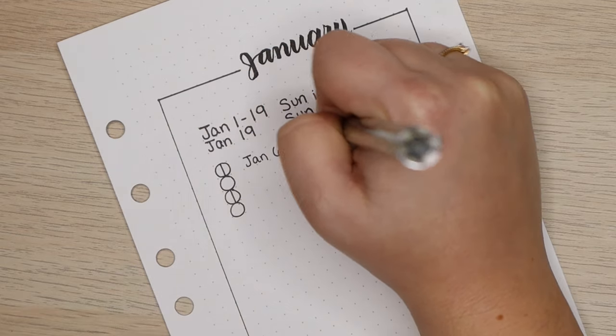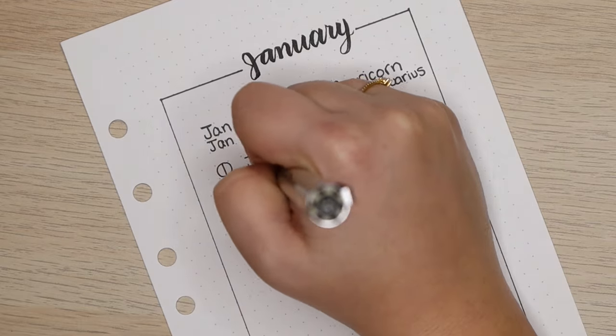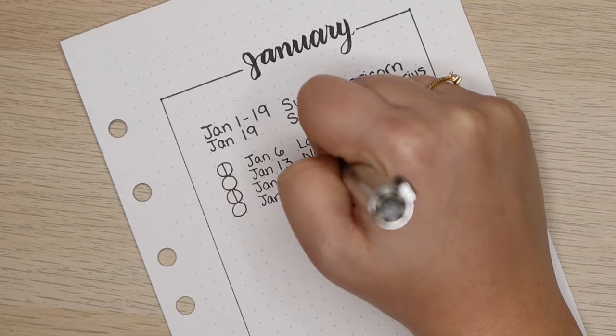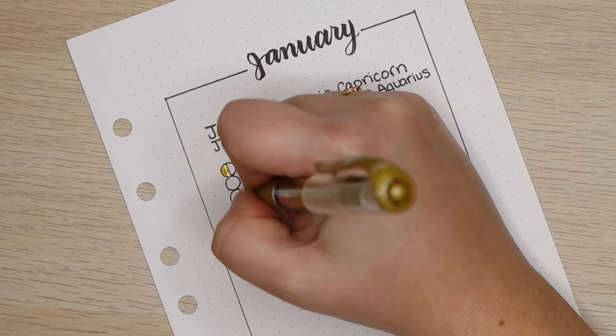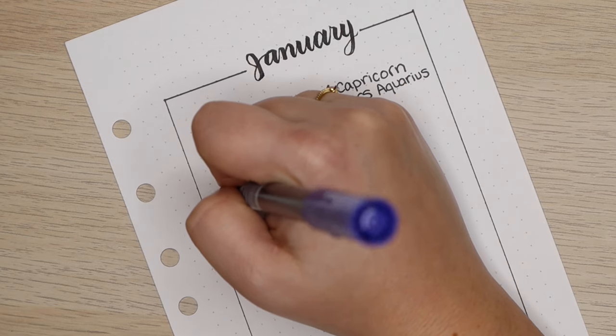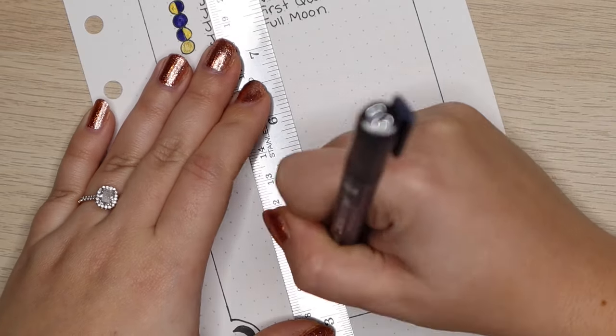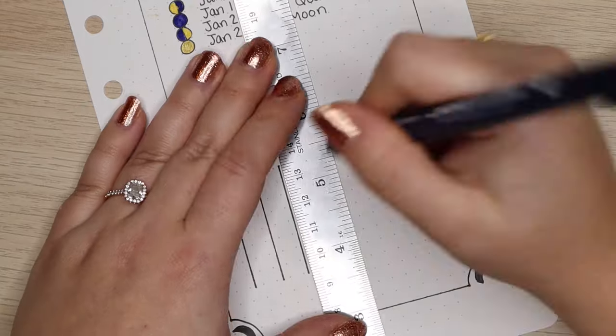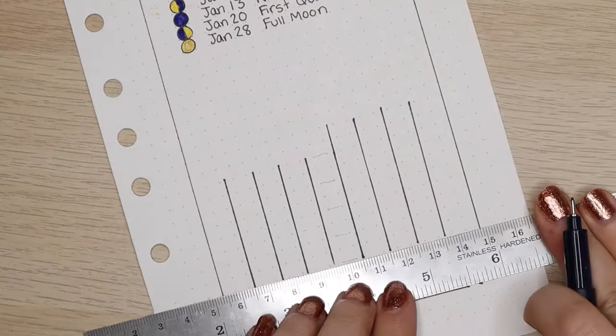Next, I included the four main phases of the moon that I use for moon journaling purposes. So I have the first quarter, the new moon, the last quarter, and the full moon in the order that they appear in the month. Of course, I was able to get this information from my lunar calendar. If there were any notable celestial events like an eclipse or a super new moon, I would have included those, but there were none for the month of January.